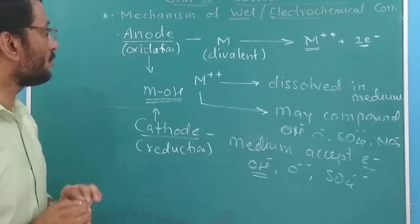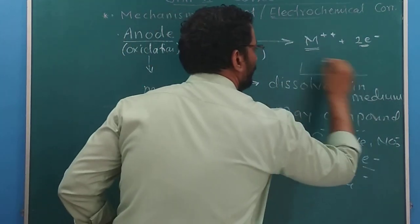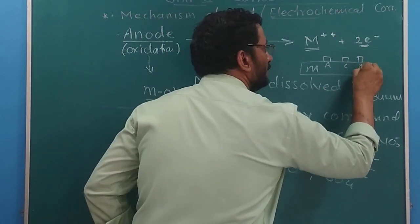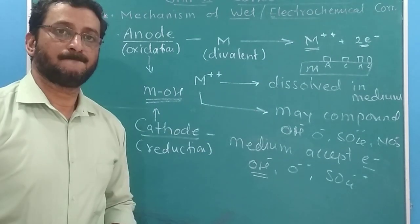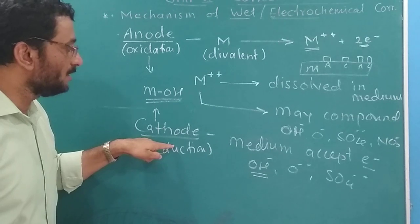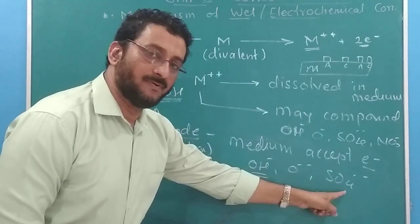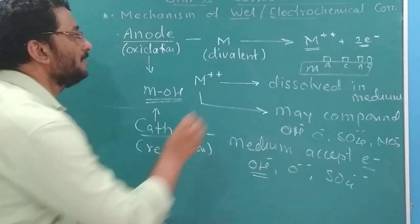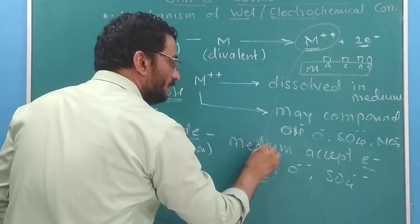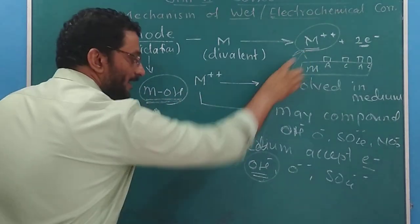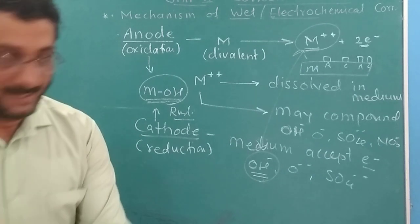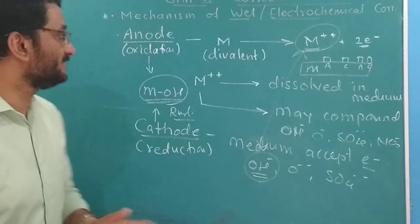In wet corrosion, one part of the metal works as the anode, another as the cathode, and so on, forming many tiny cells. The anode loses electrons; electrons flow to the cathode; the medium accepts electrons at the cathode forming anions. Finally, positively charged ions from the anode and negatively charged ions from the cathode travel toward each other, forming rust products such as metal hydroxide or metal oxide.